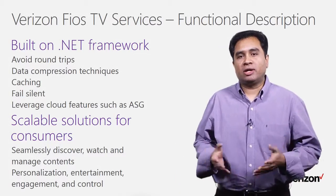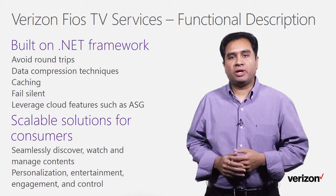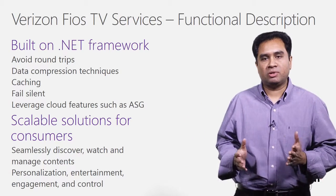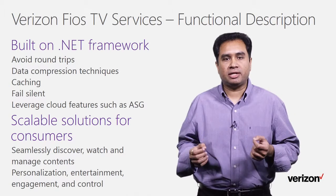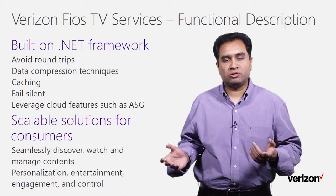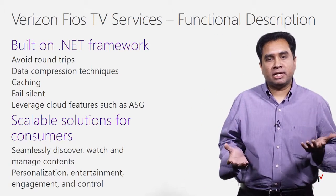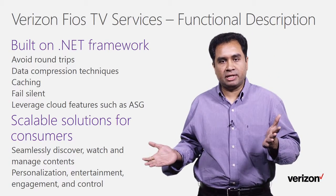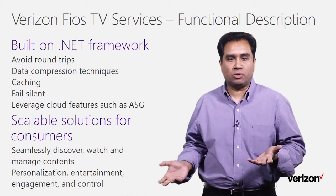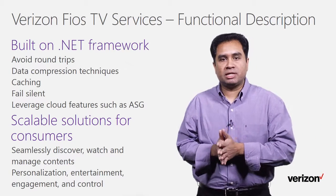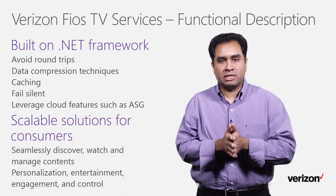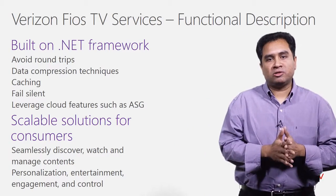We'll be taking a look at the Fios TV data services overview. Consumers today have high expectations for their digital lives and expect immediate results. Our architecture is designed to empower this expectation, ensuring our services are delivered quickly — mainly using caching, data compression, and reduced round trips. Fault tolerance is also used as part of our architecture. The consumer data is centralized in the cloud, thereby serving Fios TV content across different consumer devices like set-top boxes, Xbox, tablets, smartphones, and so on. Our prime focus is on scalable solutions with a commitment to seamlessly discover, watch, and manage content, and our application goal is to support personalization, entertainment, engagement, and control of Fios TV content.